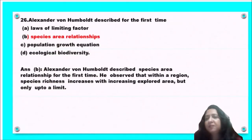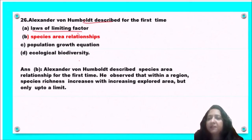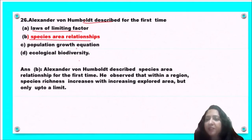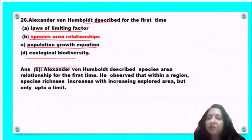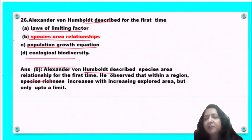Next question: Alexander von Humboldt described for the first time — the law of limiting factors, species-area relationship, population growth equation, or ecological biodiversity? Alexander von Humboldt described the species-area relationship for the first time. So option B is the correct answer.